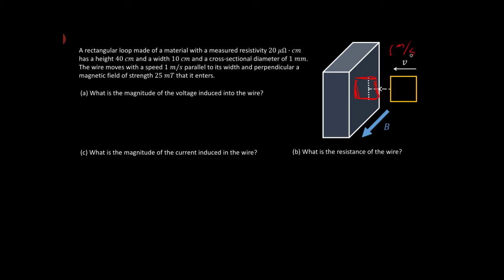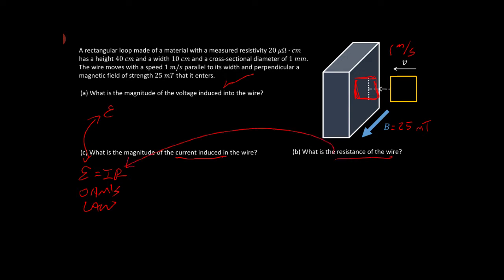At that point, it will have a one meter per second speed. The field is 25 millitesla. So we want to figure out eventually what the induced current is. I would do that first. We need the voltage because we're going to use Ohm's law. So we're going to get that potential difference, that electromotive force. And after we get that electromotive force, we'll figure out what the resistance is, and then we'll shove it all back in here.